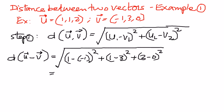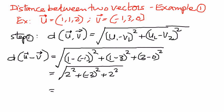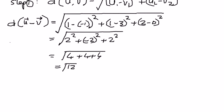Therefore, when we simplify this, each term is going to be 4. To simplify further, 4 times 3 is 12. Since 4 is a perfect square, it can be pulled out of the radical term as 2, and therefore we are left with the square root of 3.